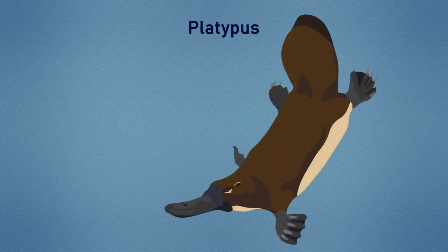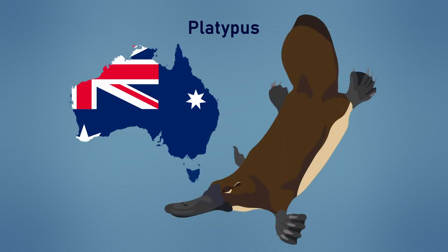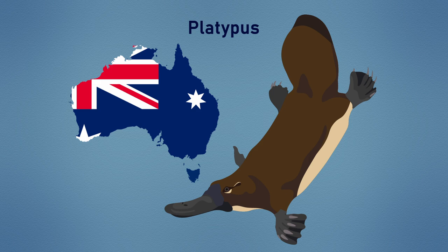The other living monotreme is the platypus, another Antipodean oddity. And like platypuses, the peculiarity of echidnas is far more than skin deep.